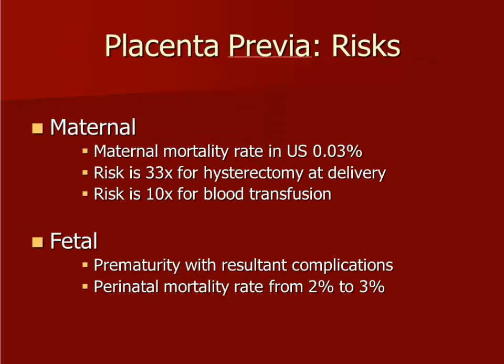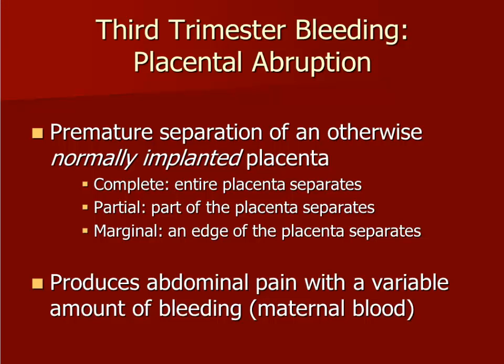The risks of placenta previa are mostly related to blood loss for the mother and prematurity of the fetus. The second important diagnosis to rule out in a patient who presents with third trimester bleeding is placental abruption. An abruption is an abnormally premature separation of a normally located placenta. The placenta can separate partially, leading to several possible outcomes, or it can separate fully, leading to fetal death.